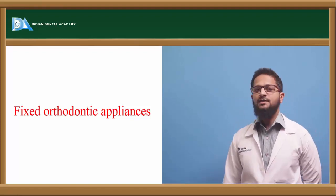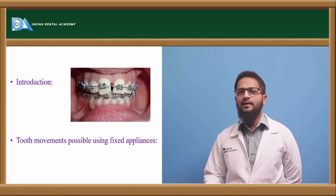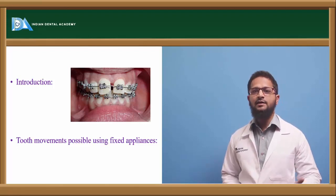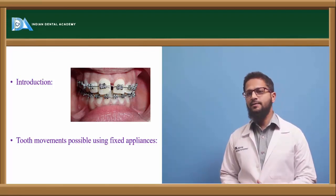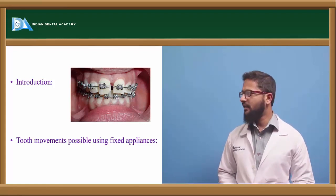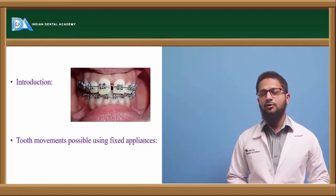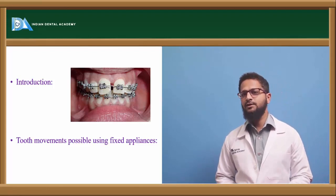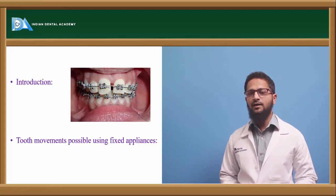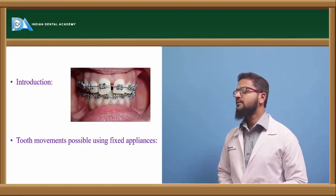The topic for discussion is fixed orthodontic appliances. As the name suggests, fixed appliances are appliances which are directly placed into the oral cavity. They are fixed onto the teeth and do not depend upon patient cooperation. They are fixed onto the teeth by means of either banding or bonding, which will be discussed further. Treatment effects with fixed appliances are considered to be faster because they are completely fixed in the oral cavity.